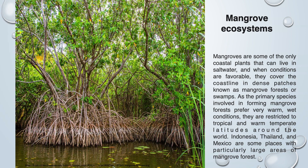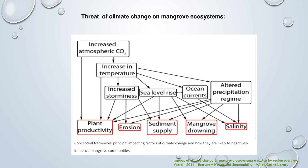Mangrove ecosystem: Mangroves are some of the only coastal plants that can live in salt water. When conditions are favourable, they cover coastlines in dense patches known as mangrove forests or swamps. As the primary species involved in forming mangrove forests prefer very warm, wet conditions, they are restricted to tropical and warm temperate latitudes. Indonesia, Thailand, and Mexico are some places with particularly large areas of mangrove forest. A diagram shows the conceptual framework of impacting factors of climate change and how they are likely to negatively influence mangrove communities.